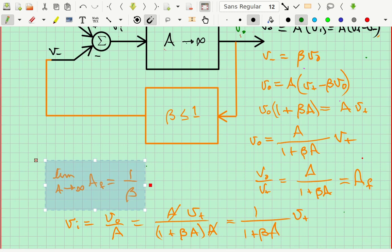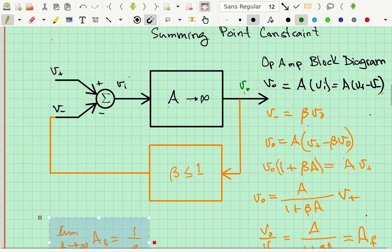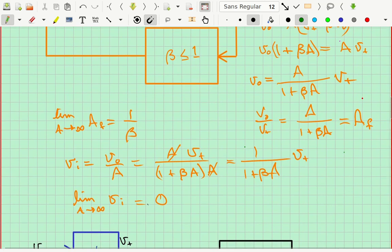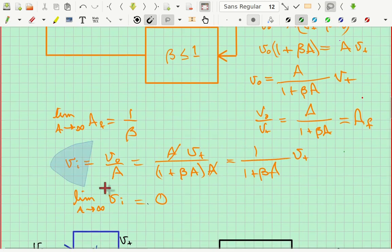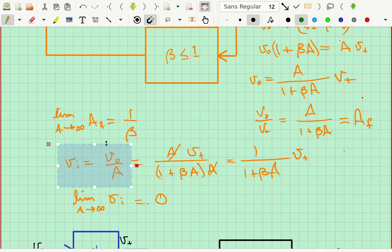Now let's look at the input voltage VI. Notice that Vout was equal to A VI. That means if we divide both sides by A, we get VI equals Vout over A. So that's what I've done right here. VI equals Vout over A. And Vout was A over 1 plus beta A times V plus from this equation right here. And so plugging that all together, notice that the A's cancel. And you get 1 over 1 plus beta A times V plus.